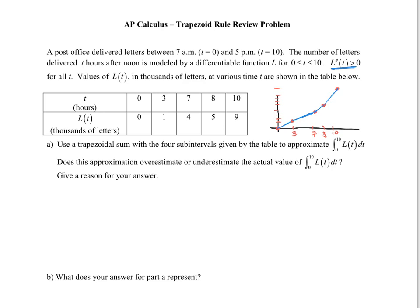Does this approximation overestimate or underestimate the actual value? Give a reason for your answer. So we can set this up with a trapezoid rule. It says four subintervals, so if I connect these, you'll notice I will end up with these four trapezoids. Here's trapezoid 1, 2, 3, and 4.